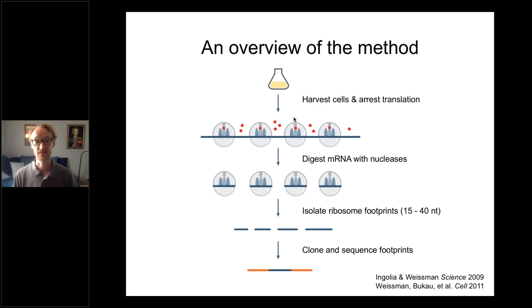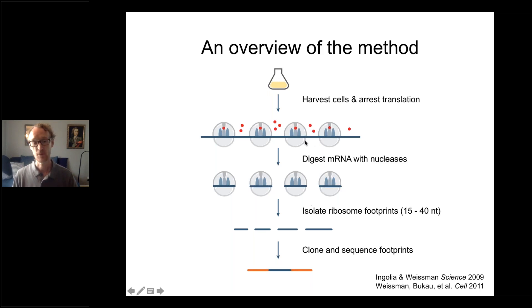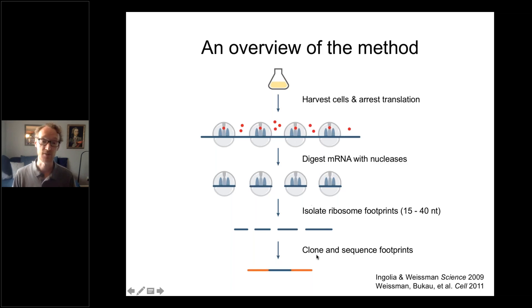Here's a quick overview of the method as it looks in bacteria. We grow up cultures of bacteria, harvest the cells, and lyse them. We arrest translation by adding antibiotics into the lysis buffer so that ribosomes aren't moving and represent where they were in the cell. We then treat this lysate with nucleases that digest all RNA not protected by ribosomes, leaving ribosome-protected footprints. We isolate the RNA, run it on a gel, isolate footprints of a particular size, clone them, and sequence using Illumina chemistry. This gives a genome-wide view of where all the ribosomes are at a single time point.